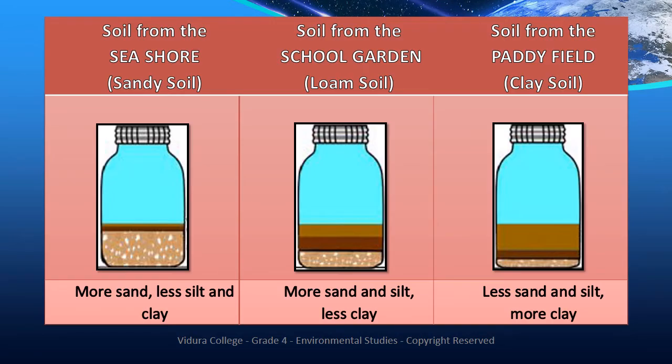Now we are going to observe what is inside these types of soil. We will take three clear jam jars and fill about half of each bottle with a small amount of each soil sample. Fill the other half with water, close the lid, shake the bottle well, and keep the bottles aside for a few hours to settle and observe.